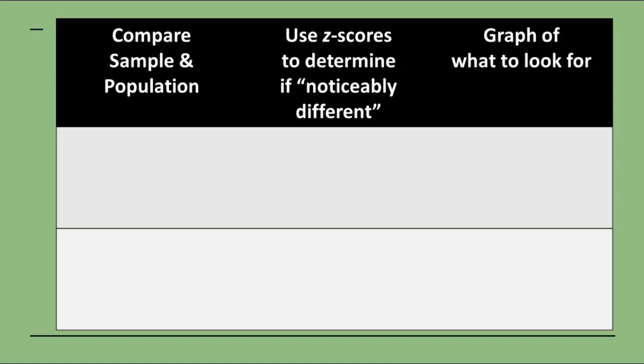We can use z-scores to determine if the sample data is noticeably different from the population. Recall that z-scores around zero, or around the mean, are pretty common or expected. However, if the z-score is an outlier, an extreme score, this is not very common or expected at all, which could indicate that something might be going on with your data.